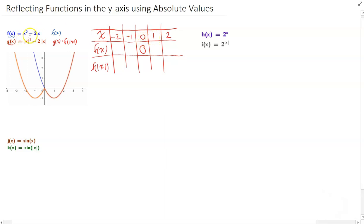And if I sub 2 in, I'll get 2 squared, which is 4, minus 2 times 2, which is 0. I'll just put one more on the end. 3 squared is 9 minus 2 times 3 is 6.